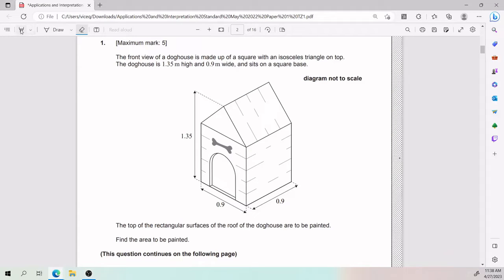Ladies and gentlemen, for this first one we have that the front view of a doghouse is made up of a square with an isosceles triangle on top. The doghouse is 1.35 meters high and 0.9 meters wide and sits on a square base. The top of the rectangular surfaces of the roof of the doghouse are to be painted. Find the area to be painted.